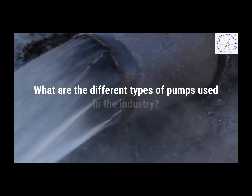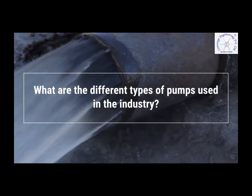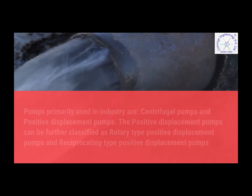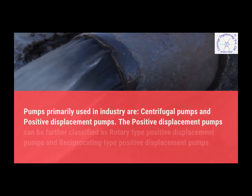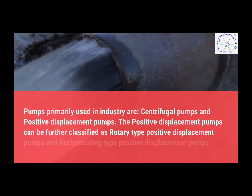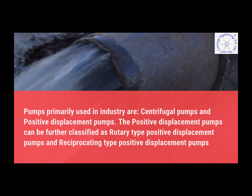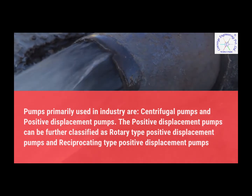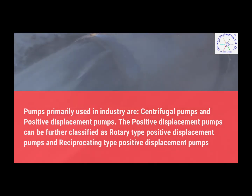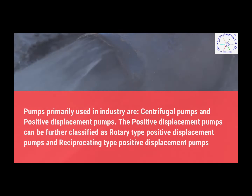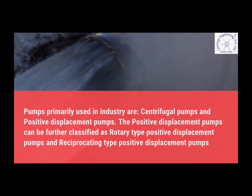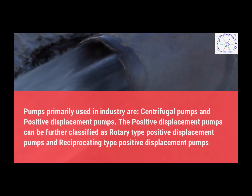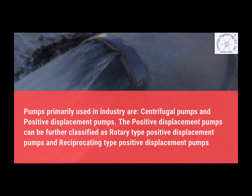What are the different types of pumps used in the industry? Pumps primarily used in industry are centrifugal pumps and positive displacement pumps. Positive displacement pumps can be further classified as rotary-type and reciprocating-type positive displacement pumps.